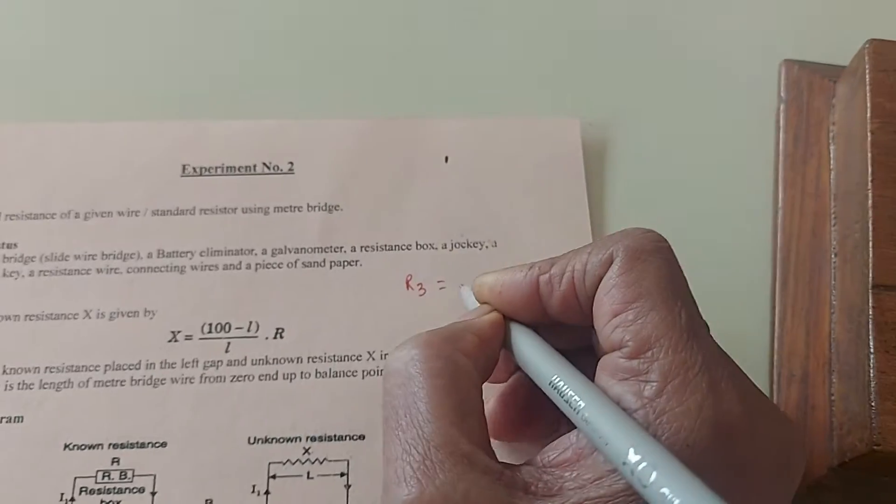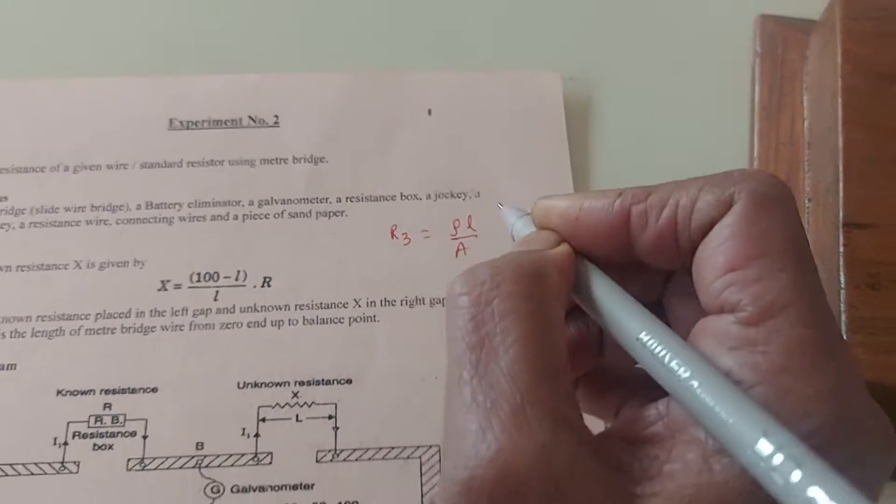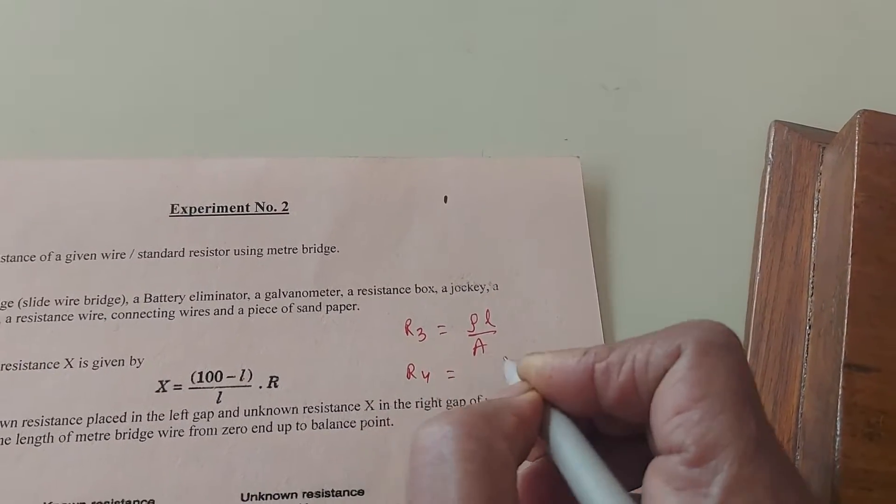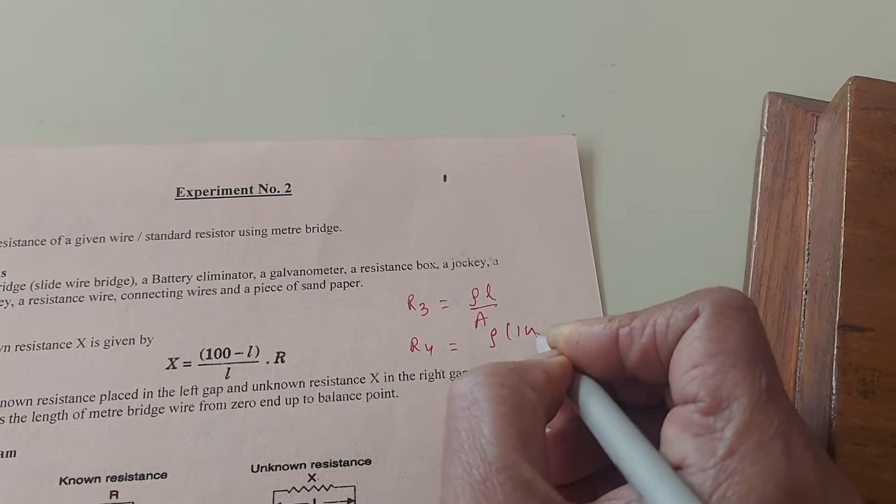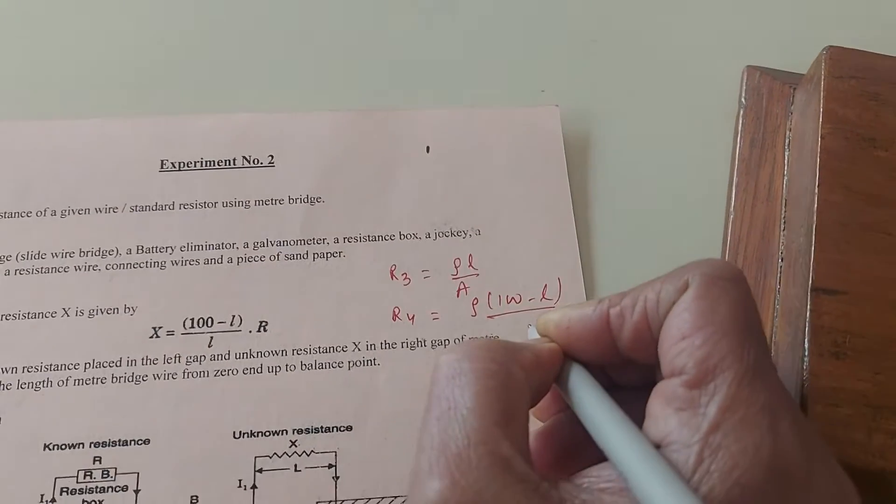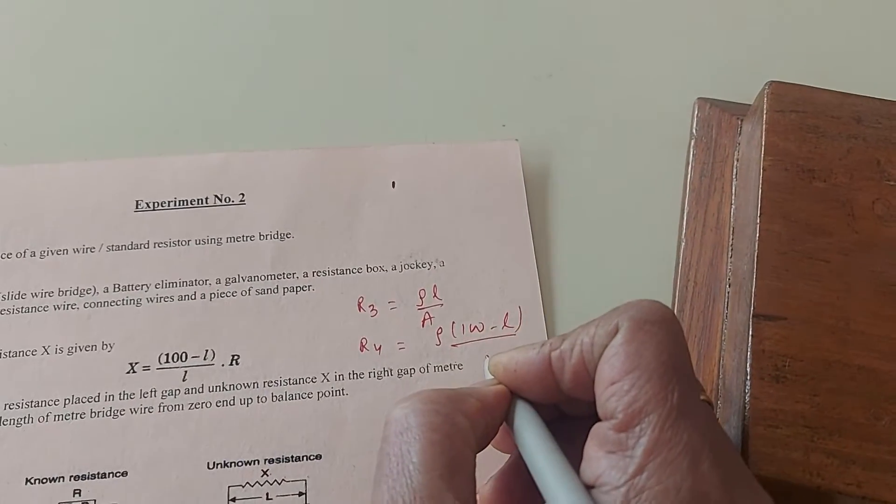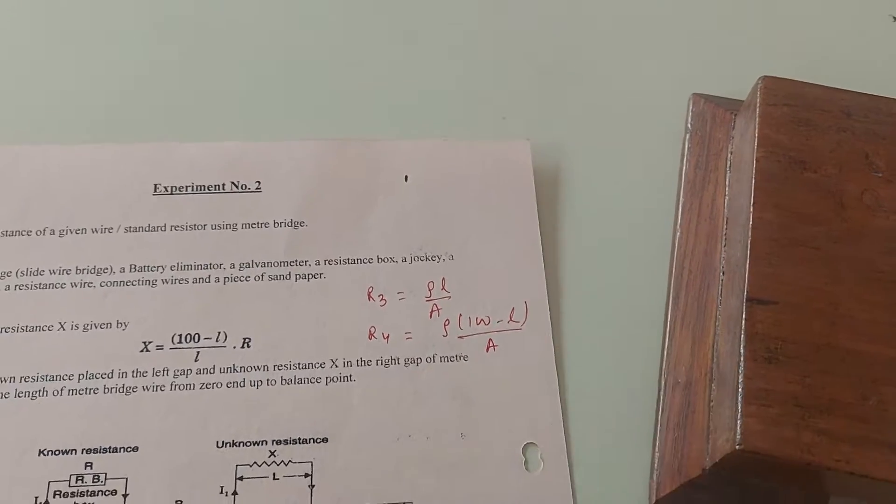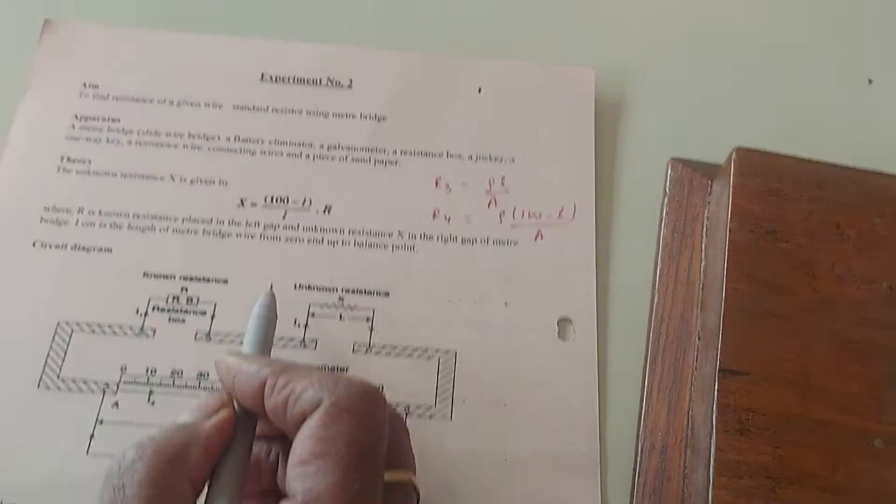R3 will be equal to rho L by A, and R4 equals rho times 100 minus L by A. Because if L length is measured from the left hand side, then 100 minus L is the remaining.